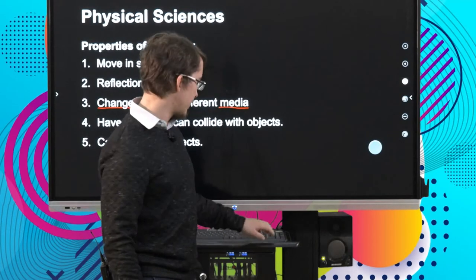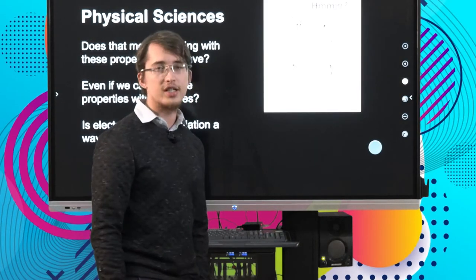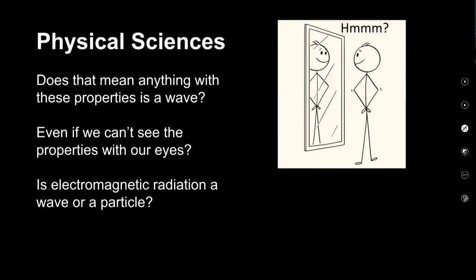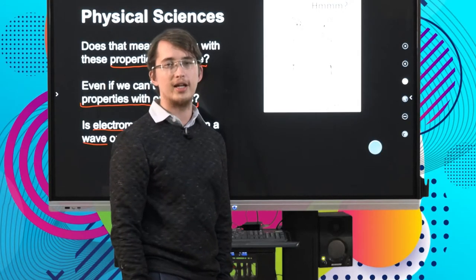The last thing we need to do is ask ourselves a few more questions: does everything with these properties constitute a wave? What happens if we can't see the properties with our eyes? And finally, the most important question for this lesson: is electromagnetic radiation a wave or a particle? Let's take a break and then we can come back and find out.